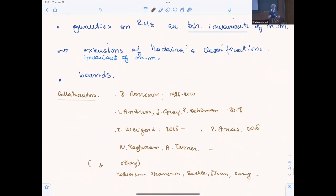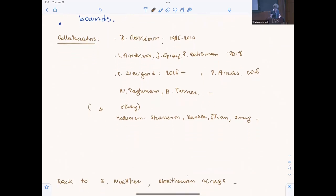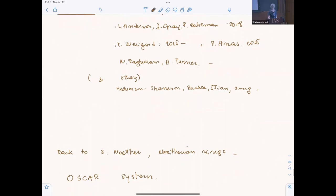This is a list of the collaborators: the first was Morrison from 1996 to 2010, then a sequence of other collaborators where we looked at various different properties, looking at the assignments. Andrew Turner, which is on the last line, is involved in a project called the OSCAR system, which is a computer project based in Germany, where in particular it codes all the models that have been found with all the representations. This is a program that really uses algebra.